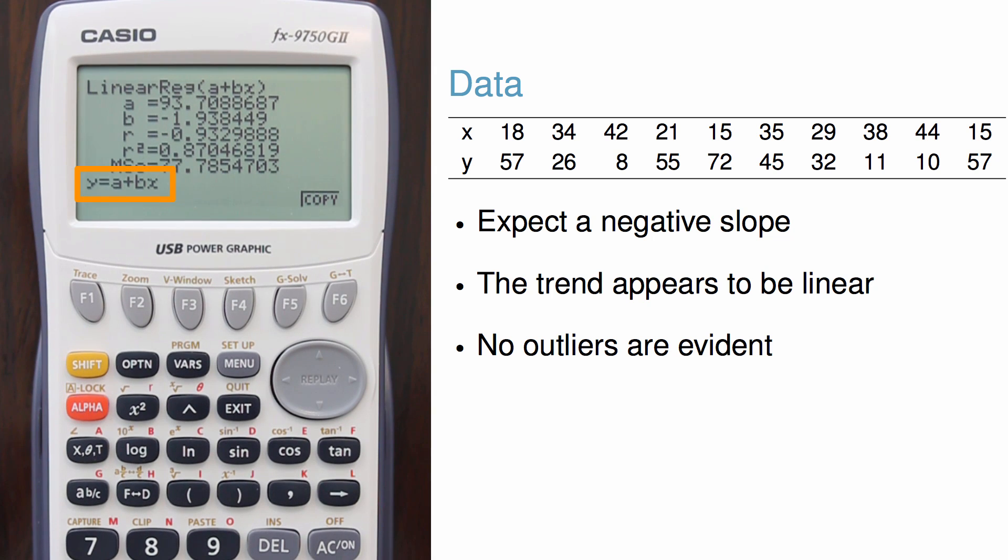The regression output shows the form of the equation, the y-intercept of the best fit line, the slope of the best fit line, the correlation, the r-squared value, and the mean squared error of the residuals.